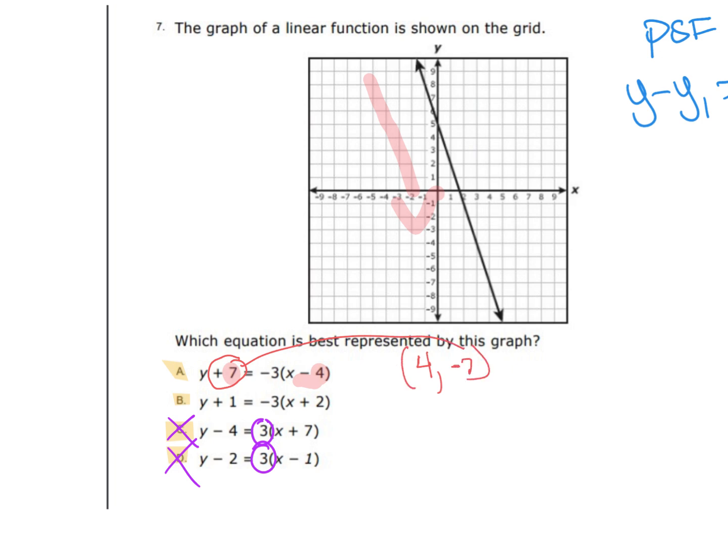So first let me plot that point on that positive 4, negative 7, so I should have a point right here. So far that looks good. I'm just going to label it A.